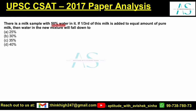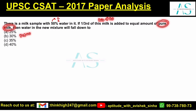There is a milk sample with 50% water in it. 50% means 1 by 2 water — out of 2 parts, 1 part is water. If 1 third of this milk is added to equal amount of pure milk, what is the difference? When talking about milk, it means mixture milk which is mixed with water. Pure milk has no water. Then water in the new mixture will fall down to what?